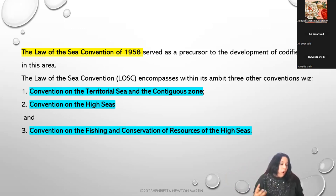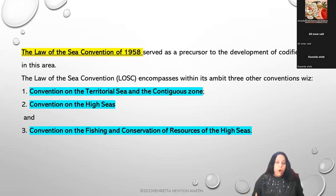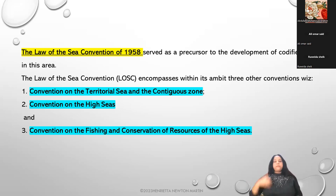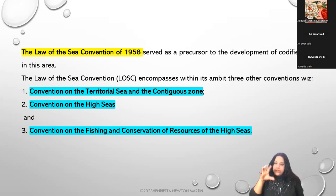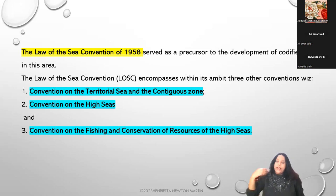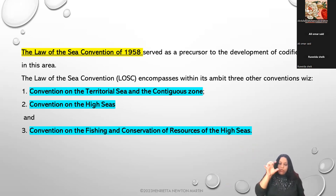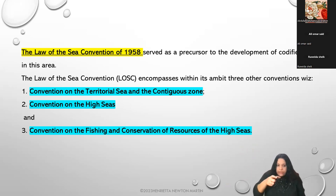I'm also going to throw light on the internal waters. Internal waters are distinctive from territorial sea or high sea. Territorial sea is an area surrounding a particular land or country. High sea is beyond the territorial sea. Contiguous zones are those zones attached to the territorial sea at a certain nautical miles distance.